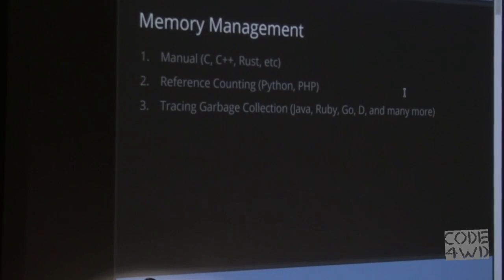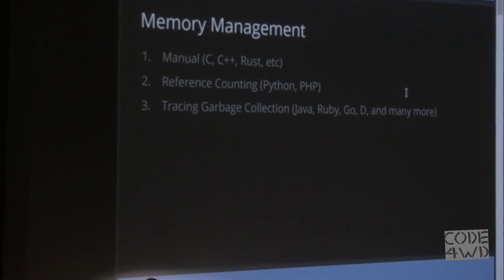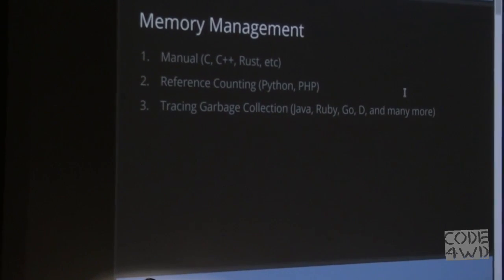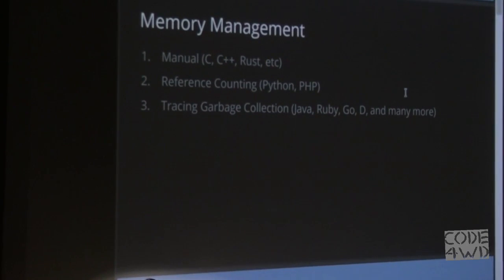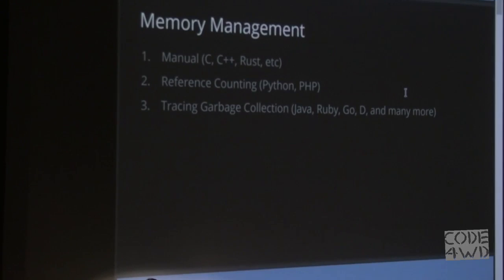Manual memory management basically comes down to: there's a function you call, you tell it how much memory you want, you get that in return or it fails. And depending on the result you can do whatever you want with it. Once you're done, you have to explicitly release that back to the operating system, or terminate the program when that happens automatically.